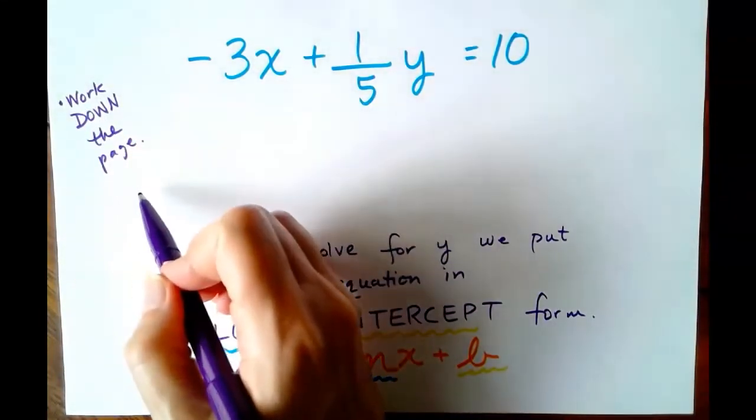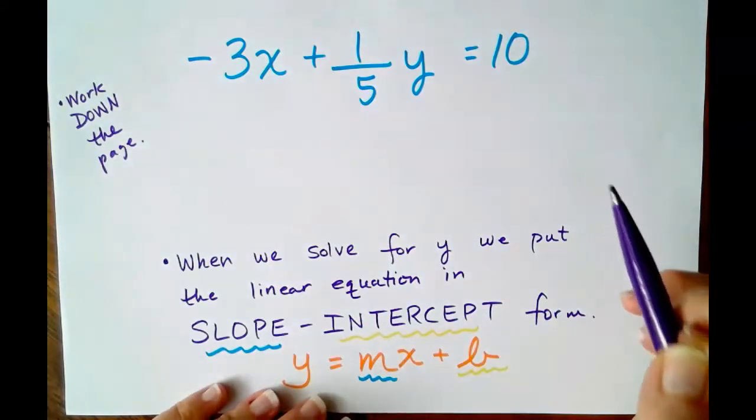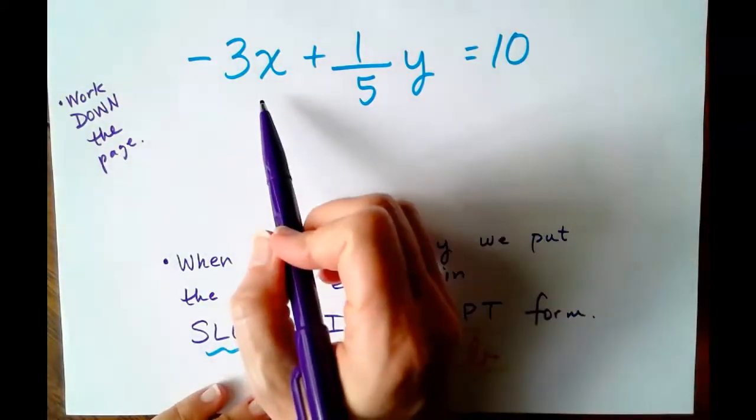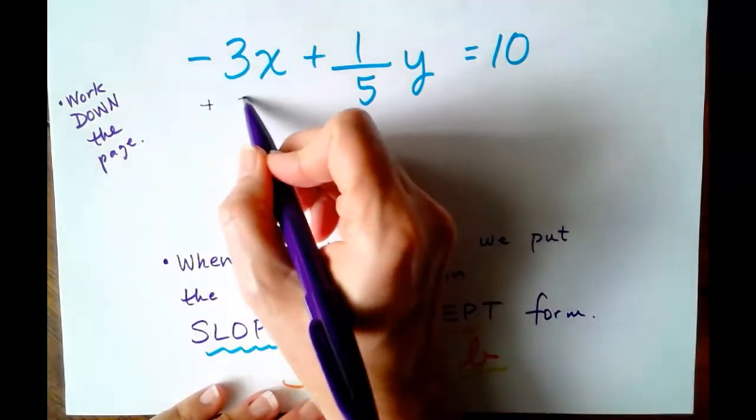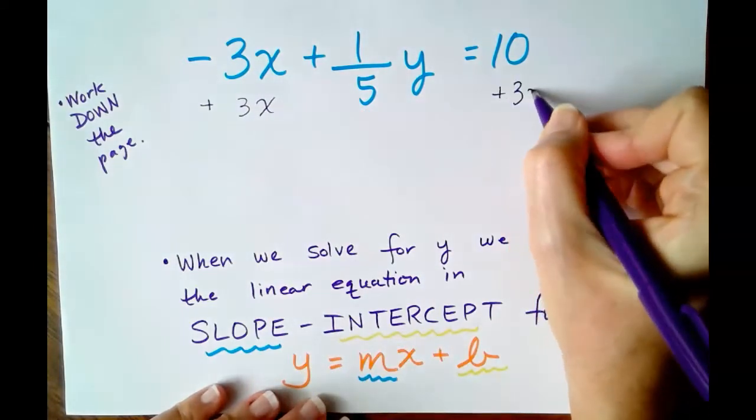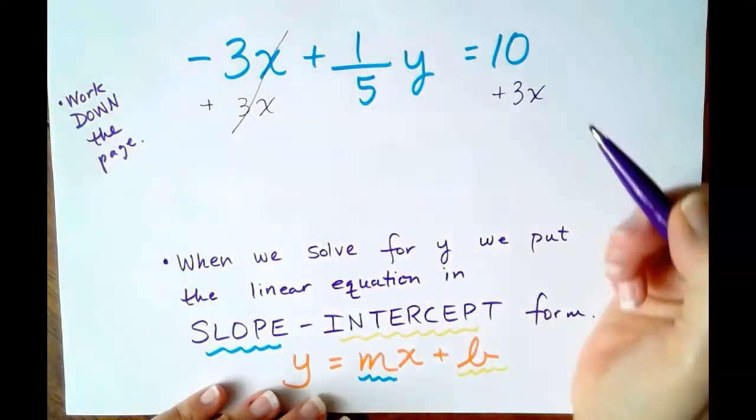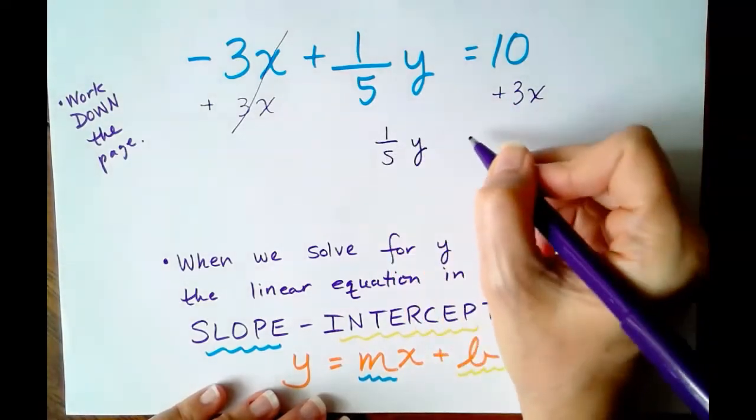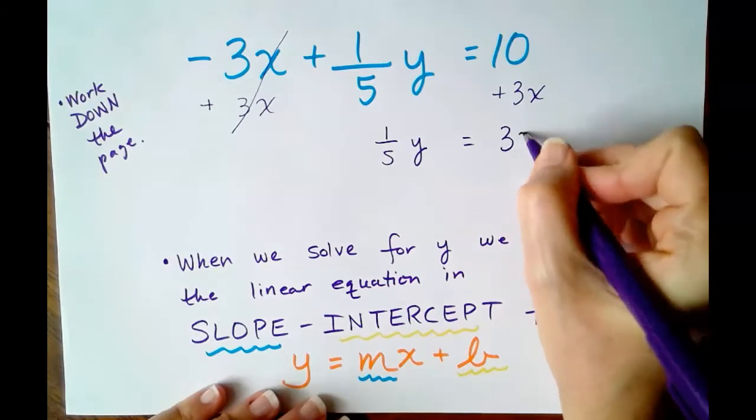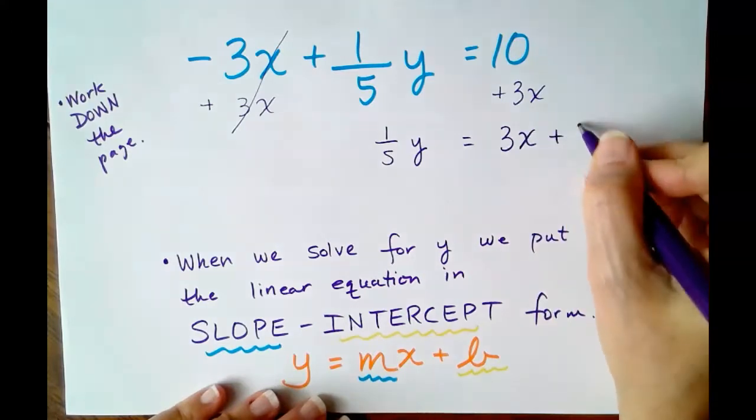Remember, we're going to work down the page. So what are we going to do first? We're going to undo negative 3X. And we undo a negative 3X with its inverse operation plus positive 3X. So adding 3X to both sides, which gives us 1 5th Y equals 3X plus 10.